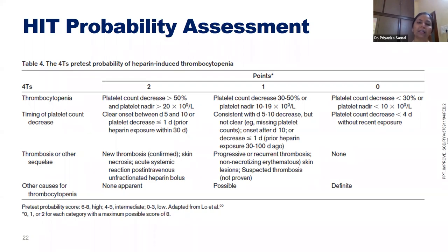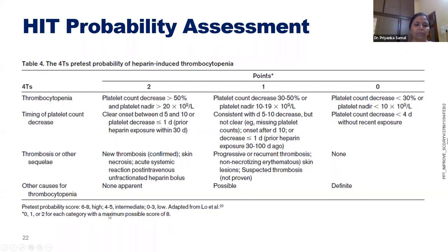In HIT, platelet activation as well as platelet destruction both occur. If we give platelet transfusions to these patients, they will develop more thrombosis — the more platelets given, the more the underlying thrombotic pathogenesis is triggered. HIT probability assessment uses the clinical 4T score, based on thrombocytopenia, timing of platelet count decrease, thrombosis or sequelae, and other causes of thrombocytopenia. A score of 6–8 is high probability, 4–5 intermediate, and 0–3 low probability.